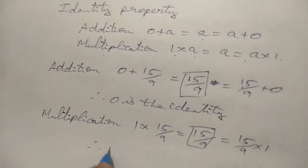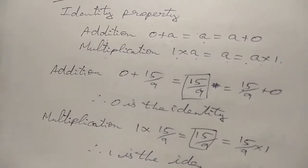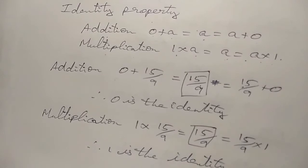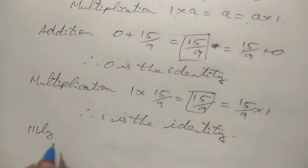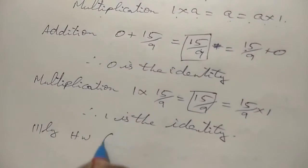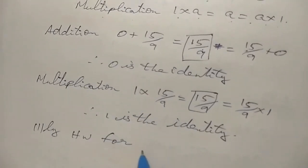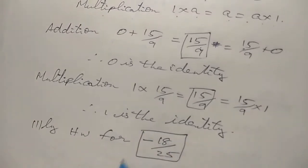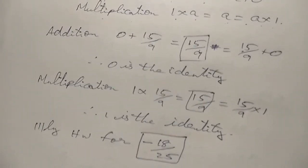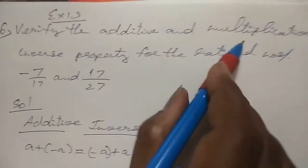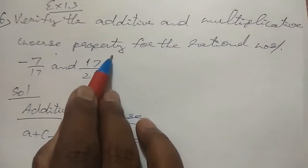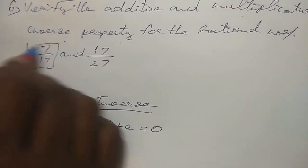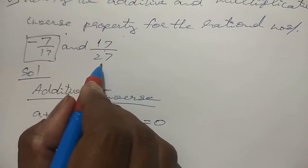Similarly, do as homework the identity property for addition and multiplication for minus 18 by 25. Exercise 1.3, sixth sum: verify the additive and multiplicative inverse property for the rational number minus 7 by 17. I will do for minus 7 by 17; you do 17 by 27 as homework.